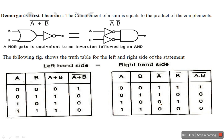All input possible combinations: 0,0 — 0,1 — 1,0 — 1,1. For A plus B: 0 plus 0 is 0, that bar is 1. 0 plus 1 is 1, that bar is 0 — NOT gate output is 0. 1 plus 0 is 1, that invert is 0. 1 plus 1 is 1, that invert is 0. This gives the left side output column.